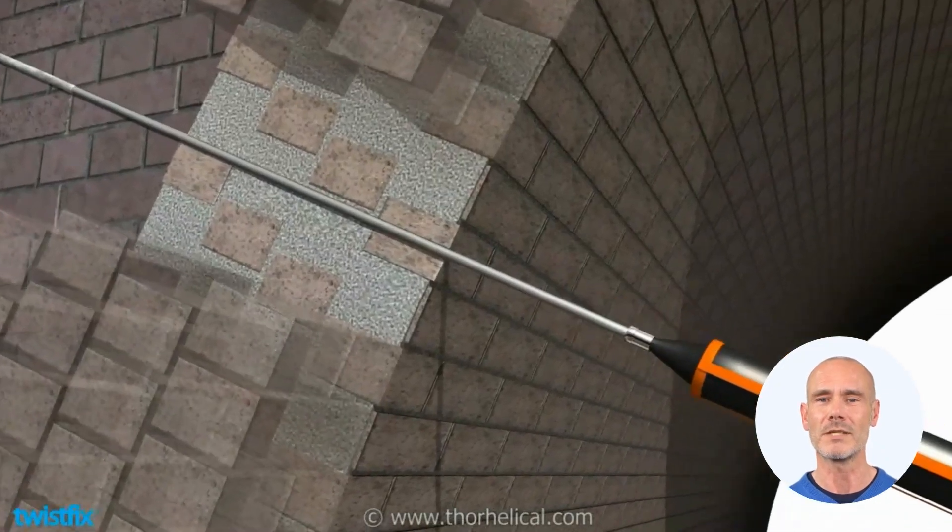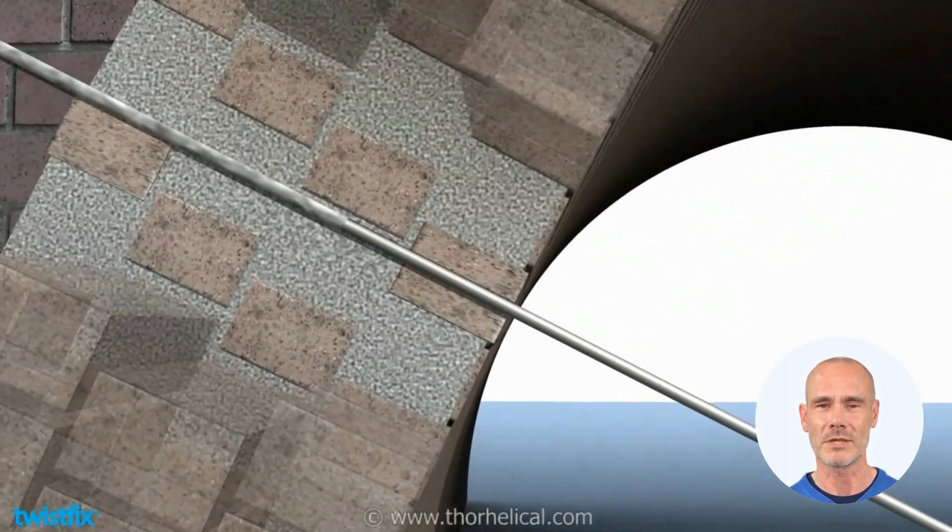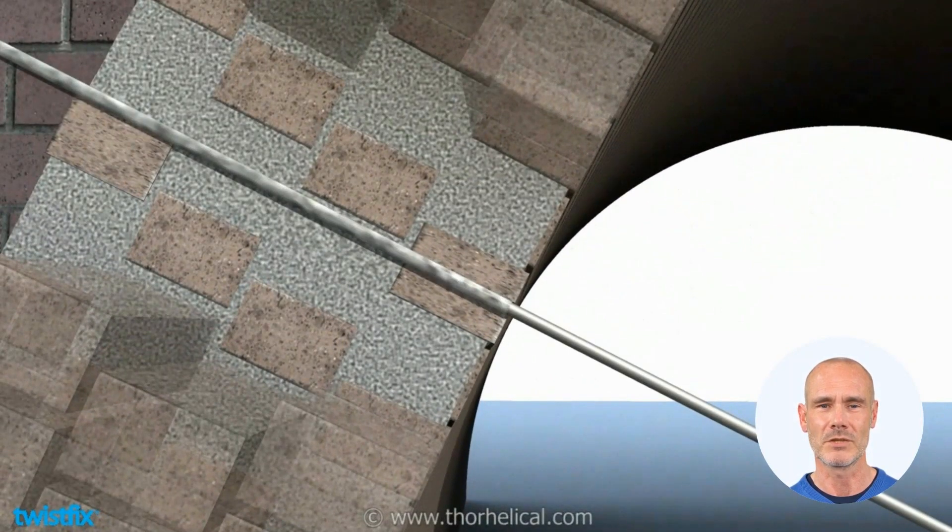Start from the back of each hole and slowly dispense the grout. Let the pressure of the extruding mixture push the nozzle backwards. This will ensure that each aperture is full and there are no air pockets.